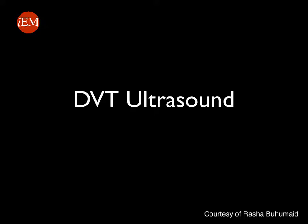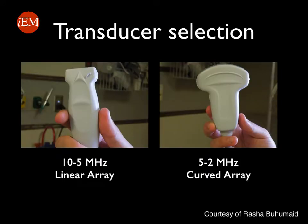In this tutorial we will be reviewing the two-zone technique to evaluate for deep venous thrombosis. The transducer you will use to perform the study is most commonly the linear or vascular probe. You will rarely need to use the curved probe, especially in obese patients where you need to image deeper structures that might not be visualized using the linear probe.